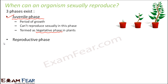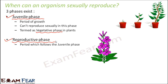Next is the reproductive phase. As the name suggests, this is the phase where the organism is capable of reproduction. It comes after the juvenile phase. Once the juvenile phase is over — once the organism has grown and become mature enough — it enters the reproductive phase, where it is capable of reproducing sexually.